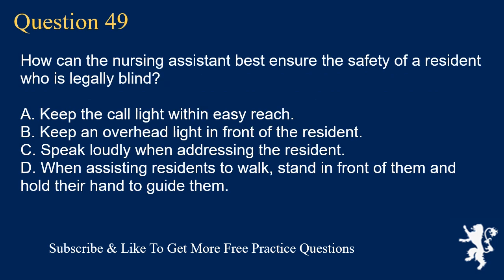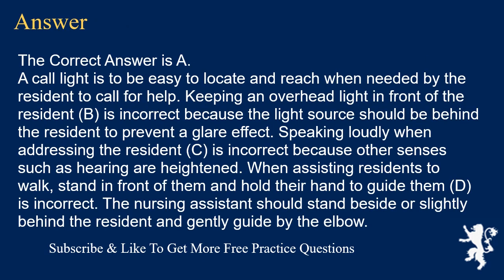Question 49. How can the nursing assistant best ensure the safety of a resident who is legally blind? A. Keep the call light within easy reach. B. Keep an overhead light in front of the resident. C. Speak loudly when addressing the resident. D. When assisting residents to walk, stand in front of them and hold their hand to guide them. The correct answer is A. A call light is to be easy to locate and reach when needed. Option B is incorrect because the light source should be behind the resident to prevent a glare effect. Option C is incorrect because other senses such as hearing are heightened. Option D is incorrect; the nursing assistant should stand beside or slightly behind the resident and gently guide by the elbow.